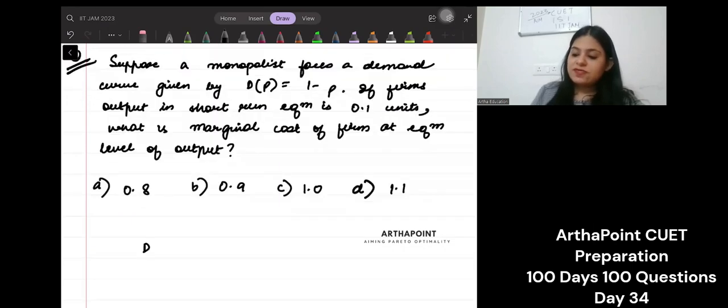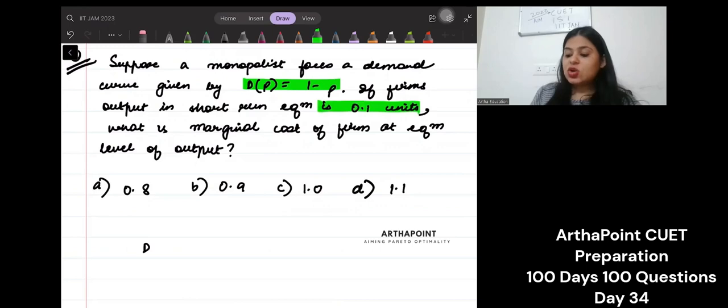Suppose the demand curve faced by a monopoly is given by p equals 1 minus p. If the firm's output in short-run equilibrium is 0.1 units, what is marginal cost of the firm at equilibrium level of output?